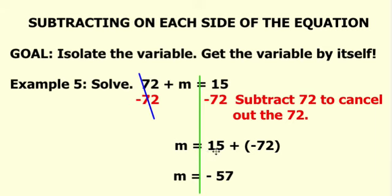You would have to find the sum of 15 and negative 72. The correct value of m is negative 57.